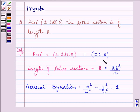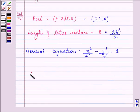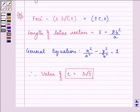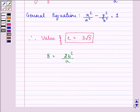So from this we can conclude that the value of c equals 3 root 5. Also we have 8 equals 2b square by a, that implies 8a by 2 equals b square.